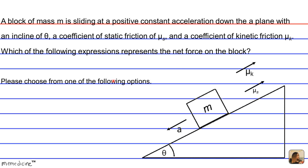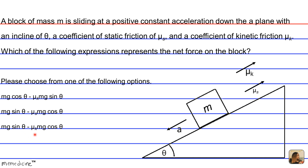Please choose from one of the following options. Is it (a) mg cos theta minus mu sub k mg sin theta? Is it (b) mg sin theta minus mu sub s mg cos theta? Is it (c) mg sin theta minus mu sub k mg cos theta? Or is it (d) mg cos theta minus mu sub s mg sin theta?